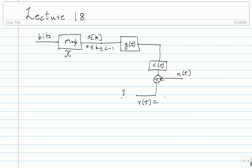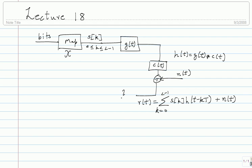I wrote r(t) as summation k equals 0 to l minus 1 of s_k times h(t minus kT), plus n(t). For some reason these h(t minus kT) do not form an orthogonal set of signals. Maybe you can't control g(t) suitably, or you don't know c(t). And h(t) works out to g(t) convolved with c(t), which is probably an unknown channel. In general h(t) is going to be complex.